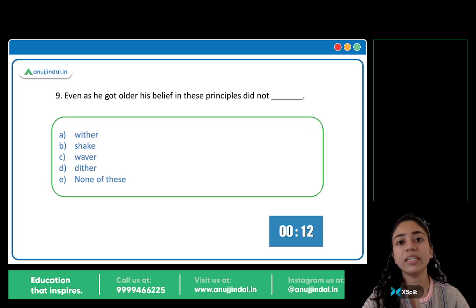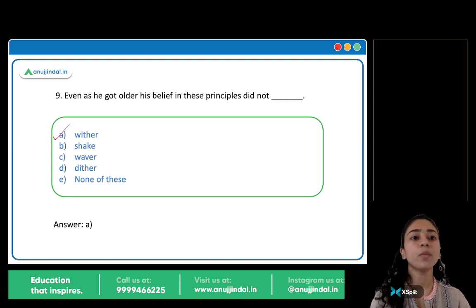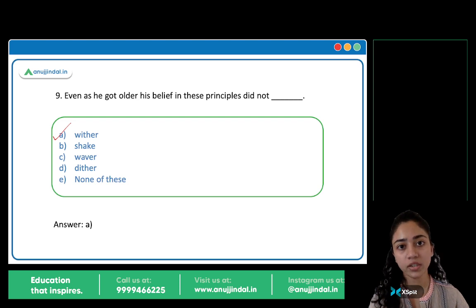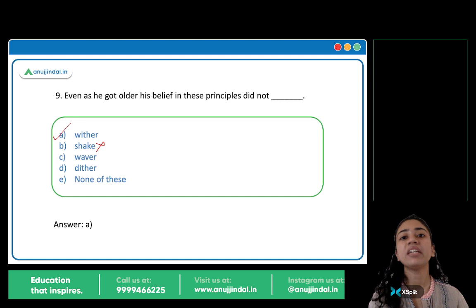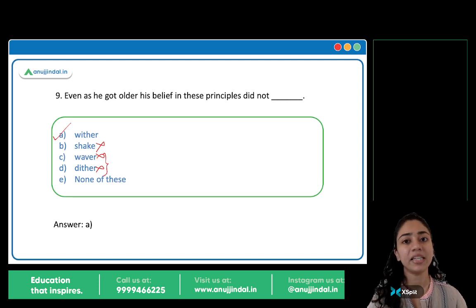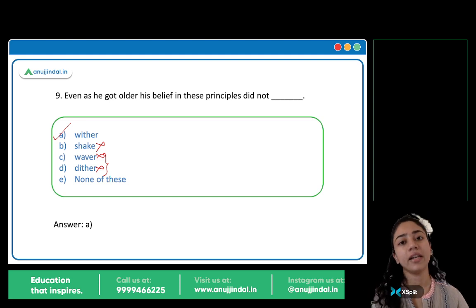Even as he got older, his belief in these principles did not wither, shake, waver, dither. The answer is A: Wither. Wither means to fade, diminish. His belief in these principles did not wither — did not fade or diminish — his beliefs remained the same. Shake doesn't fit. Waver and dither are synonyms meaning to be indecisive, to fluctuate, to be in two minds. So wither is the correct word.